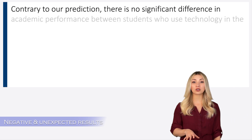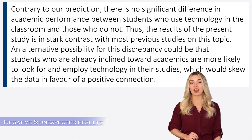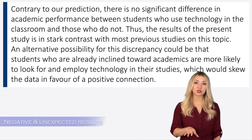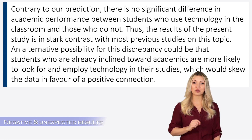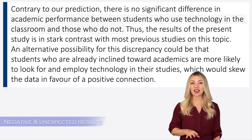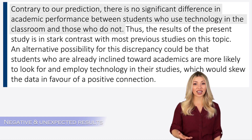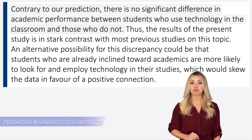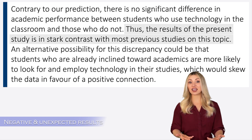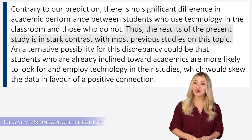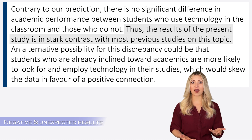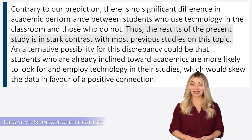Here is an example from a social sciences research paper. The author's original hypothesis is that there is a link between the use of technology in classrooms and student grades. But after conducting the experiments, their data showed that there is no link. This clearly contradicts their hypothesis. It turns out that this finding is also in contrast to previous papers published on this topic in the literature. Now the authors are finding themselves in a difficult position having to explain their findings to the readers.